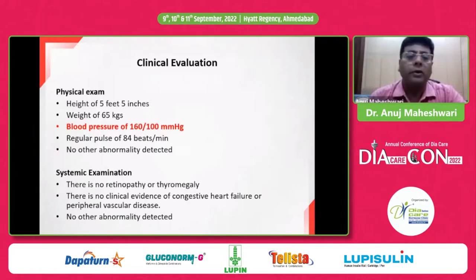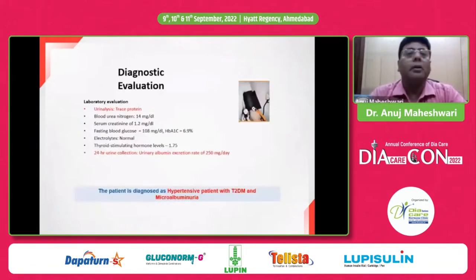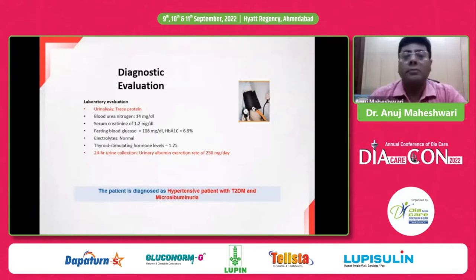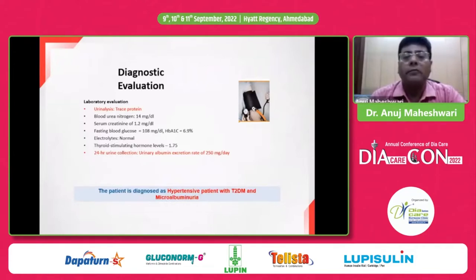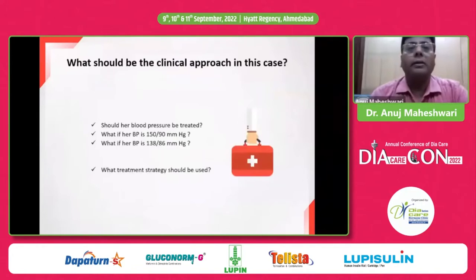There is no retinopathy, no thyromegaly, no clinical evidence of congestive heart failure or peripheral vascular disease. Laboratory evaluation shows trace protein on urinalysis, blood urea nitrogen 14, serum creatinine 1.2 (normal), fasting blood glucose 108 mg/dL, HbA1c 6.9%, electrolytes normal, TSH 1.75, and 24-hour urinary albumin excretion rate of 250 mg/day. The patient is diagnosed as hypertensive with type 2 diabetes and microalbuminuria.